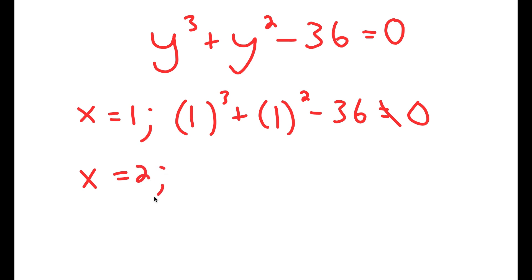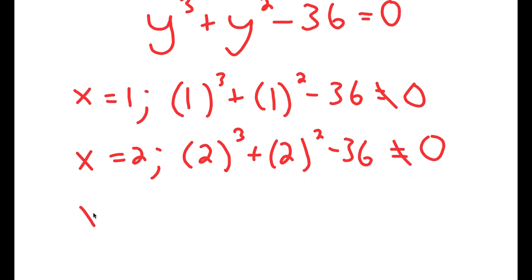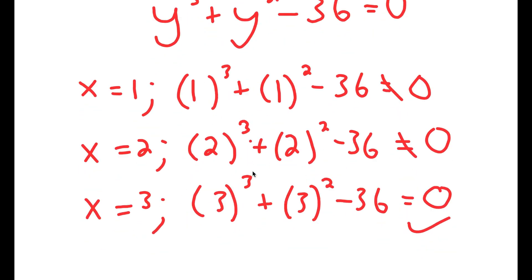For y equals 2, I get 2 to the power of 3 plus 2 squared minus 36, which is equal to 8 plus 4, which is 12 minus 36, which does not equal 0. Now for y equals 3, I get 3 to the power of 3 plus 3 squared minus 36. 3 to the power of 3 is 27, plus 3 squared is 9, so 27 plus 9 is 36. 36 minus 36 does equal 0, so y equals 3 is the solution.